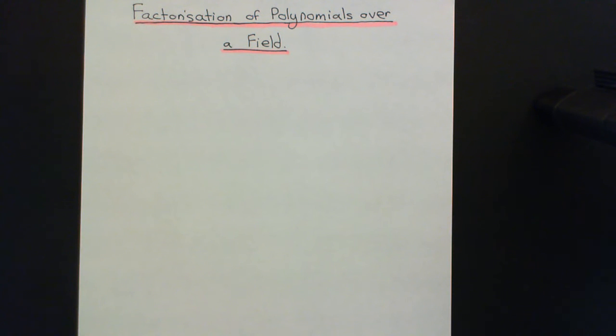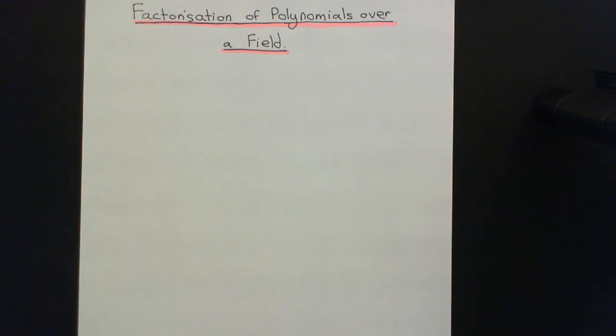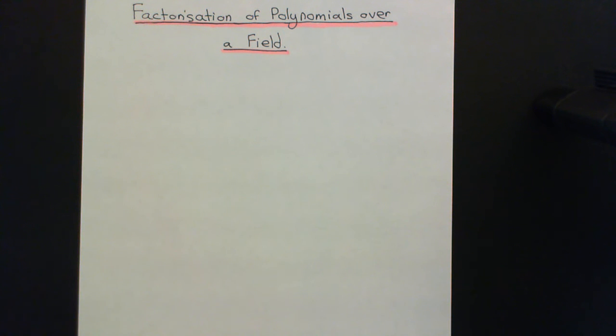Welcome to this next video in the playlist on ring theory. In this video, what I'm going to do is talk about certain theorems regarding factorization of polynomials over a general field. So factorization of polynomials that are in a ring of polynomials over a certain field. The first thing I'd like to do is characterize which polynomials of degree 1, 2 and 3 are reducible and which are irreducible in a ring of polynomials over a field.